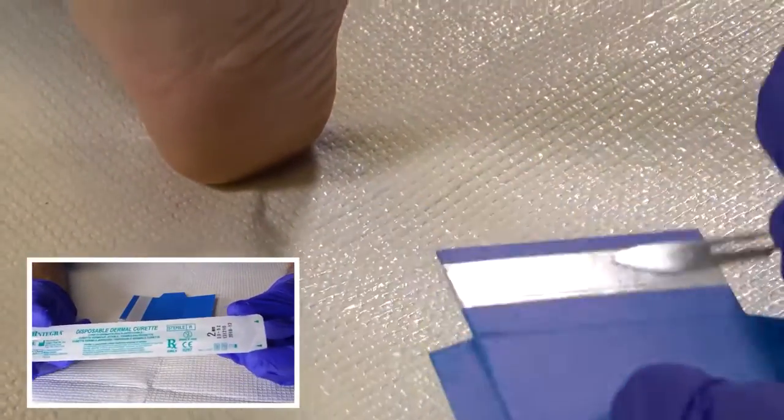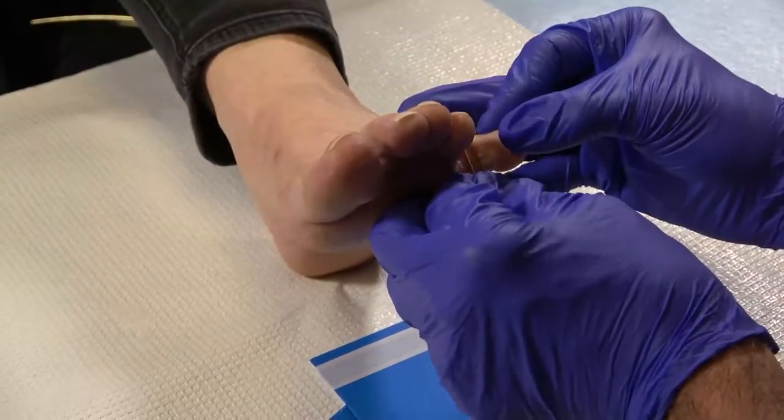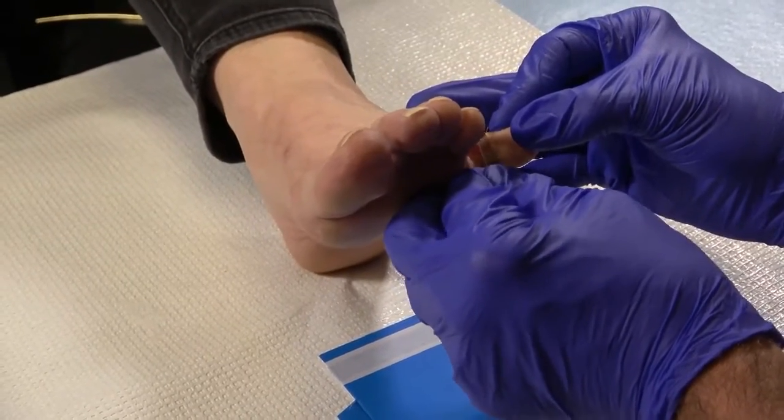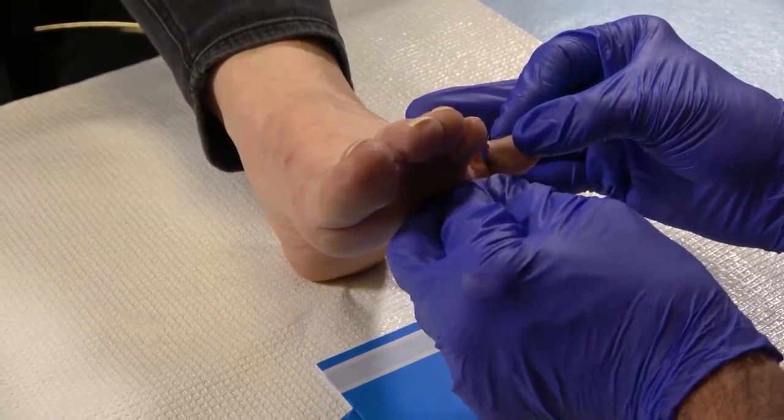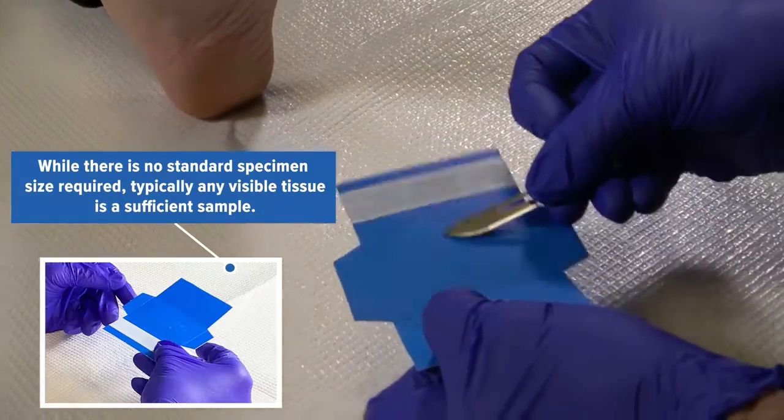The specimen is collected into a specialized skin collection pack. Place a specimen on the colored surface. This allows the collector and the laboratory to clearly visualize the sample.